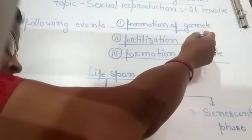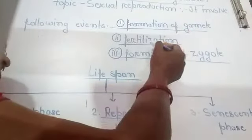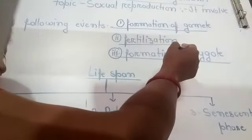After the formation of gametes, both gametes come in contact with each other and fertilization takes place.